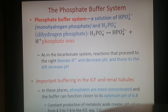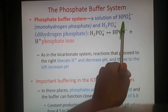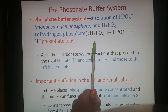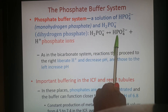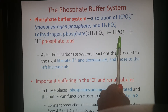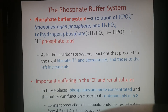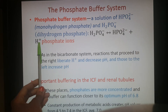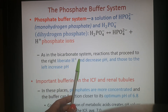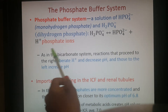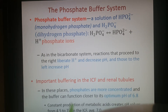The phosphate buffer system is a mixture of weak acids and bases — a solution of monohydrogen phosphate and dihydrogen phosphate. In a reversible reaction, dihydrogen phosphate is converted to monohydrogen phosphate, a hydrogen ion, and a phosphate ion. Going forward liberates hydrogen ions and decreases pH; going in reverse binds up those hydrogen ions so they're not free in solution, allowing the pH to increase.